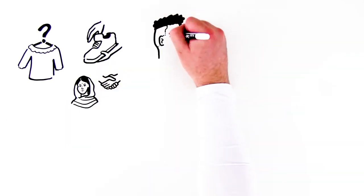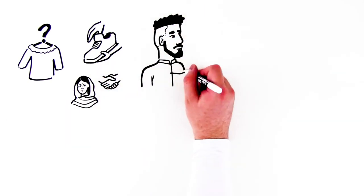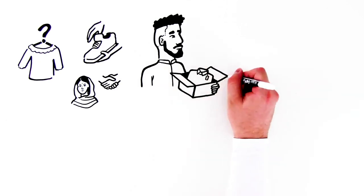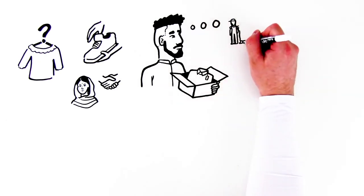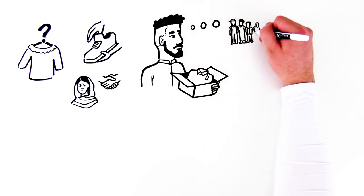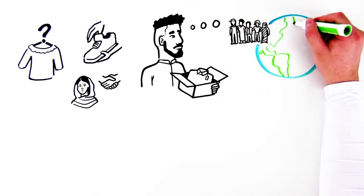Consumers are increasingly interested in how the products they buy have an impact on people and the planet, and companies are being held accountable for social and environmental issues in the apparel, footwear, and textiles industry.